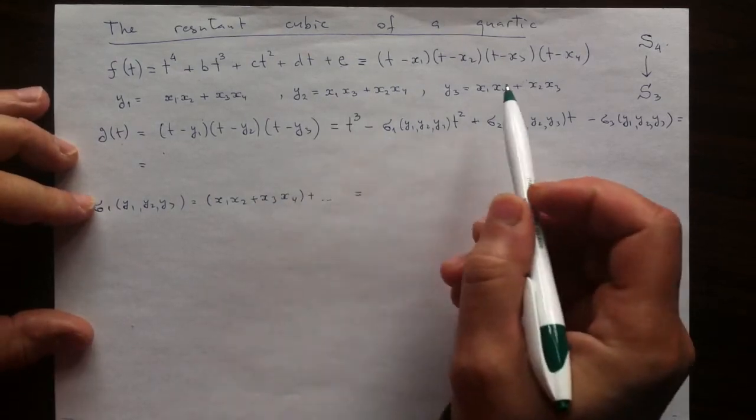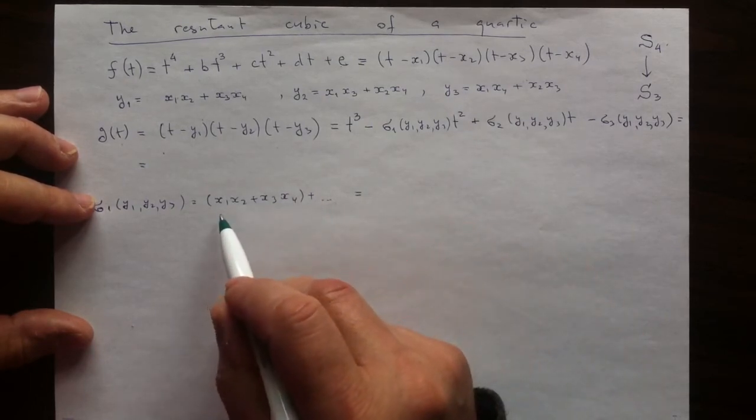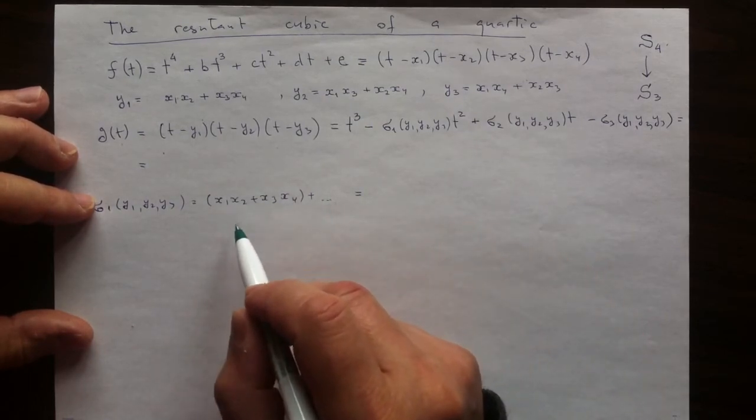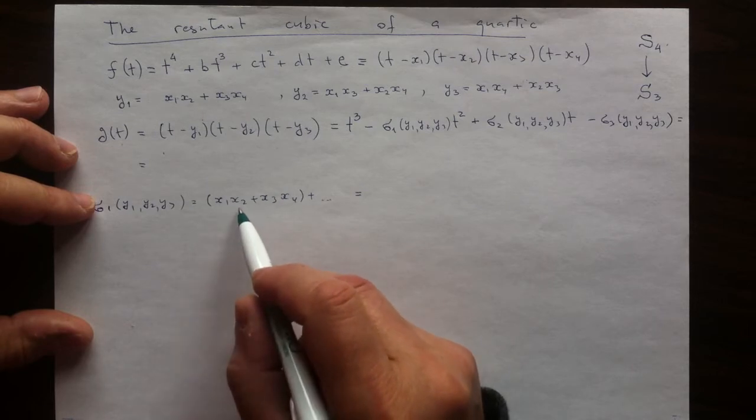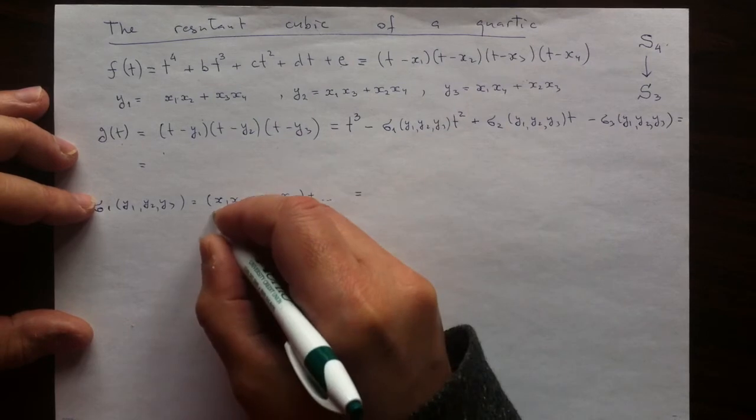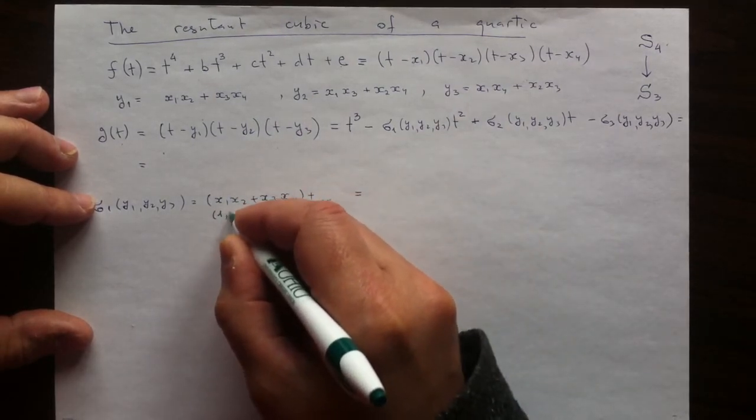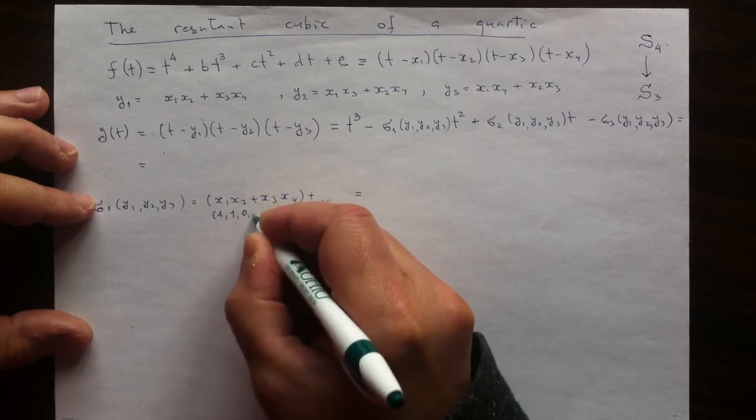I don't need to look at the rest, because what I need to find is the leading term. The leading coefficient is x1, x2, the vector of the powers is 1, 1, and then two zeros.